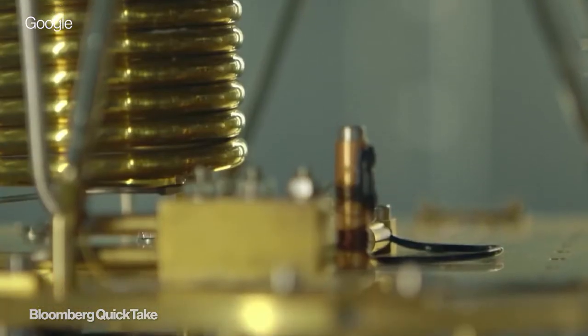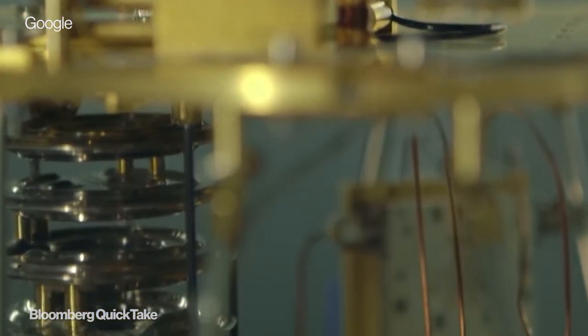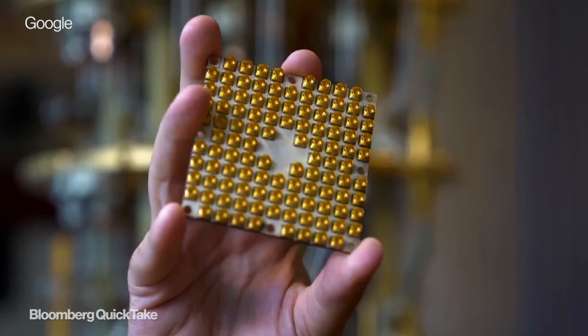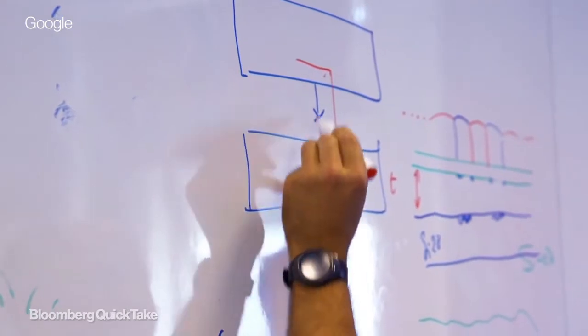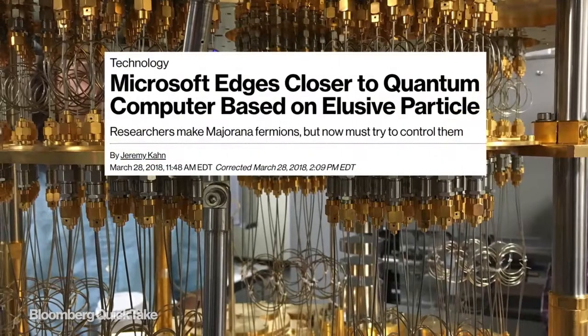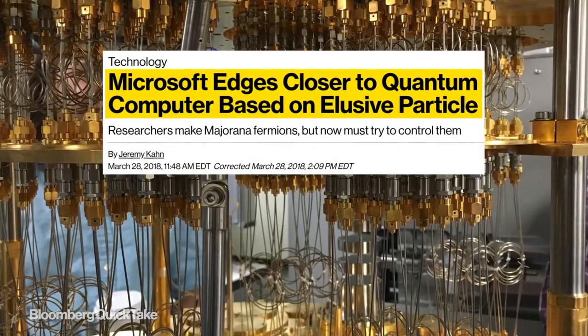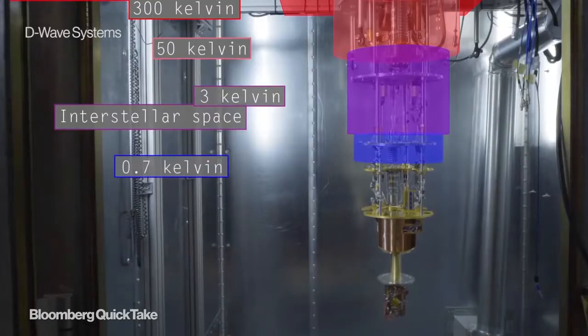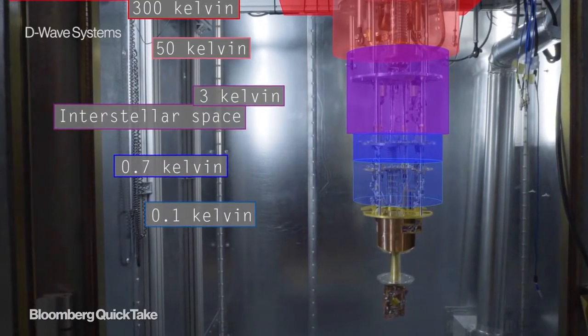When you talk about a quantum computer, you don't just talk about the traditional silicon chips that we see in normal computers. Manufacturers either use tiny loops of superconducting wire, semiconductors, combinations of both, or even stranger approaches like twisting subatomic particles into a braid. And many qubits can only exist under temperatures colder than deep space.